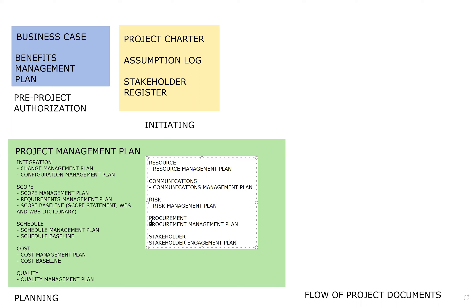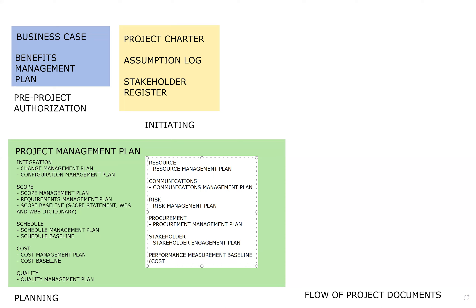Those are the major components found in a project management plan. We also have mention of a performance measurement baseline, which combines scope, schedule, and cost. Those are the components in your project management plan.